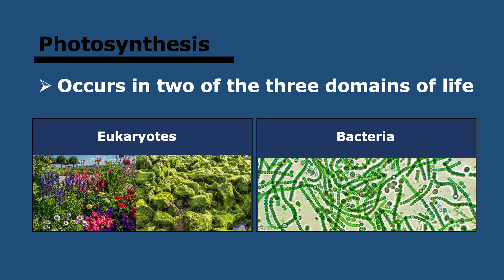Photosynthesis occurs only in two of the three domains of life because it is used by plants and algae — those are eukaryotes — and also by bacteria, in this case cyanobacteria. However, it is not used by archaea. Remember, photosynthesis involves using energy from sunlight and taking carbon dioxide from the atmosphere to produce sugars, amino acids, and other carbon compounds.